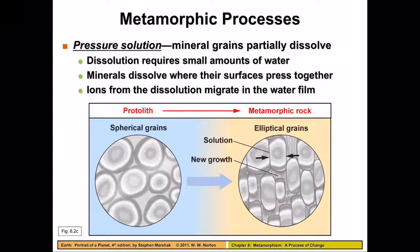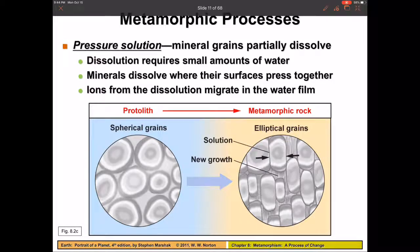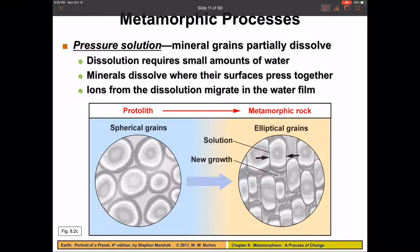Foliation can occur in two different ways. The first is called pressure solution. As mentioned earlier, in order for metamorphism to happen, there has to be water working through the system — usually in the form of steam or hot water.